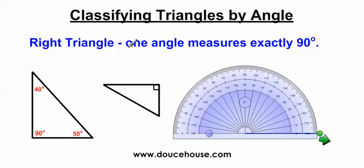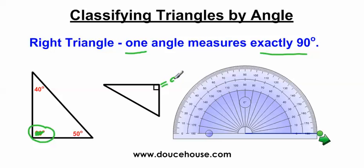Moving on, we have the right triangle. One angle measures exactly 90 degrees. Often you're not going to have a number indicating what the angle is. In math and geometry, you'll more often see a little box in one of the vertices or corners of the triangle — that tells you it's a 90-degree angle. If you're not sure whether an angle is 90 degrees and you don't have a protractor, you can tear the corner off a piece of notebook paper and lay it over the angle. If the angle exactly matches that corner, then you know it's a 90-degree angle.